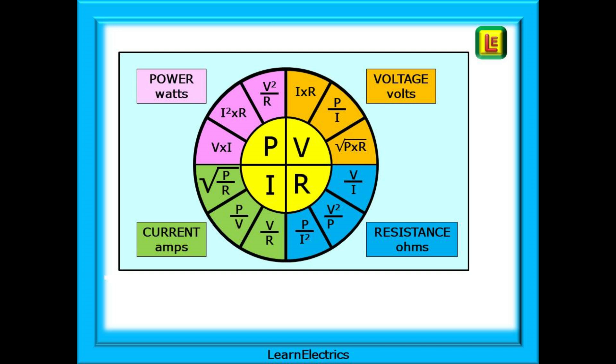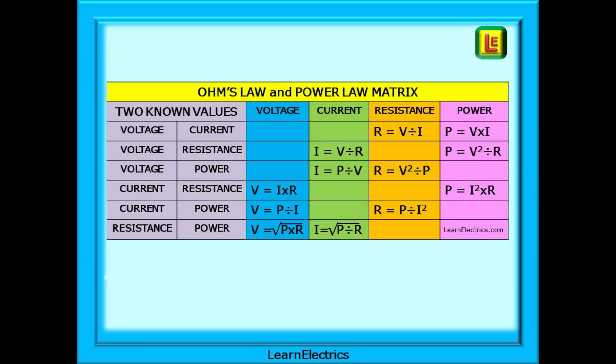This is the Ohm's Law Wheel, which allows us to enter any two variables to find a third variable in just one calculation. And this is the Ohm's Law matrix, or power matrix. It has the same function as the wheel, but it clearly shows the options for the two known variables. It's your choice which one you want to use, or just stay with the two basic triangles. They should all give the same answers.